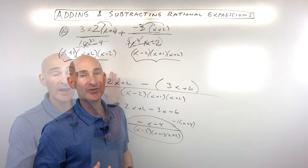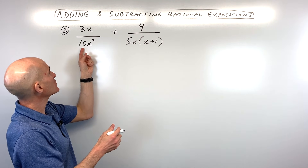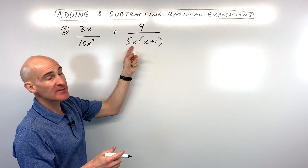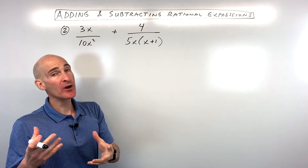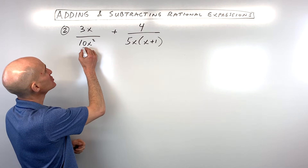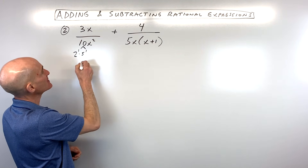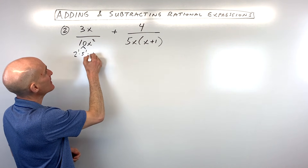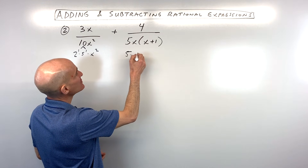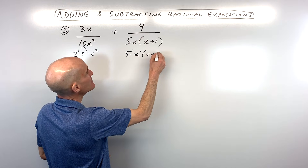Let's go on to example number two. This one's a little different because we've got a monomial here and a binomial times a monomial here. One approach is to break down these quantities as much as you can. For example, 10 is really 2 to the first times 5 to the first times x squared. Over here, 5 is already a prime number, so this is 5 to the first times x to the first times x plus 1.